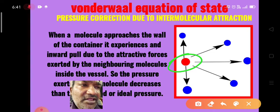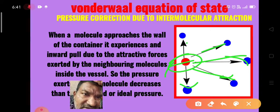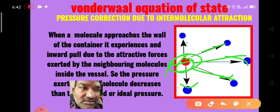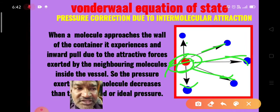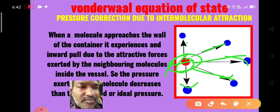The molecule near the wall is attracted by other molecules only on one side; no gas molecules are present on the other side. This means the molecule moving near the wall experiences an inward pull. If this inward pull were not there, the red color gas molecule would hit the container with greater force and exert higher pressure. Due to this inward attraction, the molecule cannot hit the wall at full capacity, so the pressure exerted decreases.